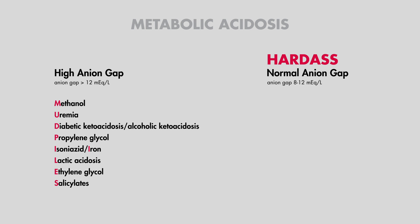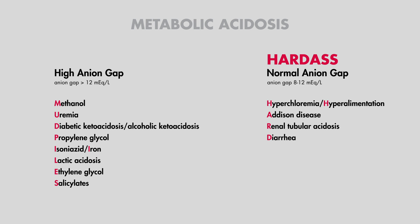When the anion gap falls within a normal range, between 8 to 12, we think about a normal anion gap metabolic acidosis and think about HARD ASS: Hyperchloremia or hyperalimentation, Addison's disease, Renal tubular acidosis, Diarrhea, Acetazolamide, Spironolactone, and Saline infusions.